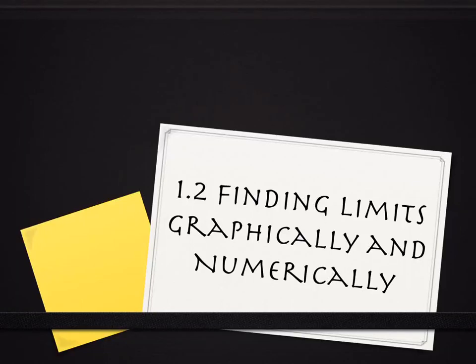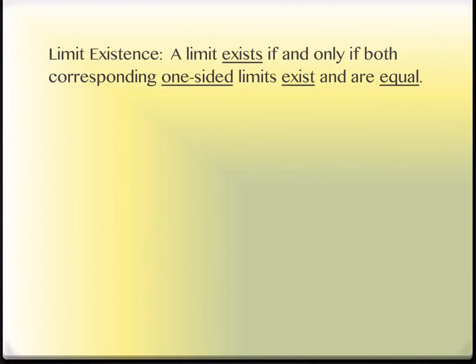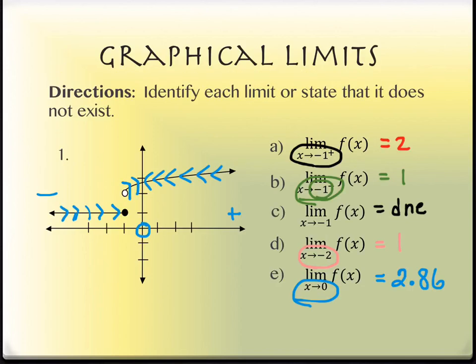Last time we took a look at section 1.2, or at least started it. We covered the first item on the list, which was graphical limits. We talked about how limits graphically means tracing along the curve of a graph towards a specific x value — from the left if it has a negative sign after it, from the right if it has a positive sign, or from both directions if it has neither.